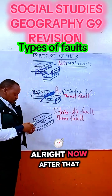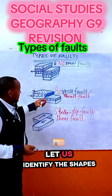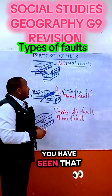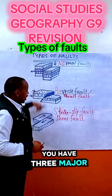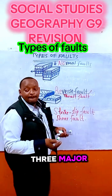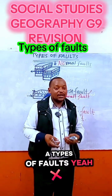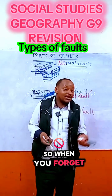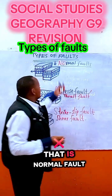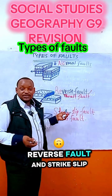Alright, now after that, let us identify the shapes. You have seen that there are three major types of faults. So when you forget, just say 'NRS': No more fault, Normal fault, Reverse fault.